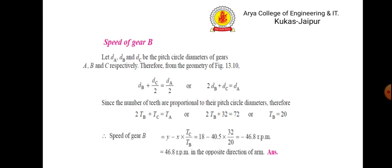Now for the speed of gear b. From the figure geometry we can write: db plus dc divided by 2 equals da by 2, or 2db plus dc equals da. Since the number of teeth are proportional to pitch circle diameter, we replace d with t, giving us the number of teeth on gear b as 20. The speed of gear b from the table is y minus x multiplied by tc by tb, giving 46.8 rpm in the opposite direction.